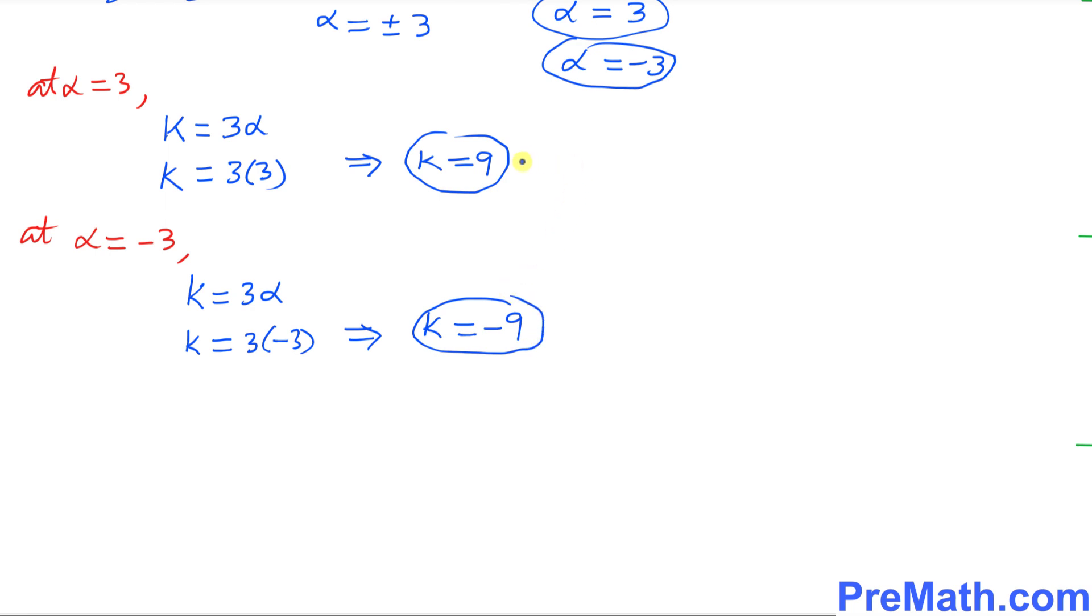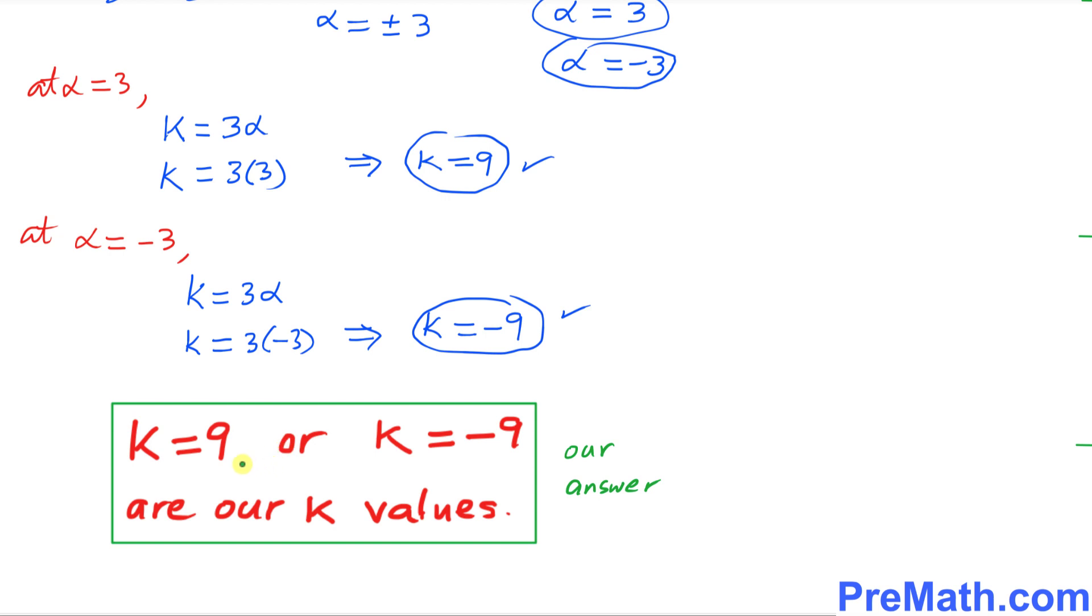So that tells us that k turns out to be negative nine. So we got two values: k equals nine or k equals negative nine. And that is our answer.